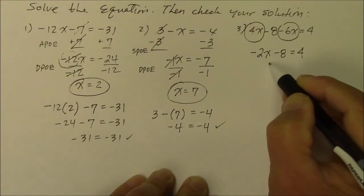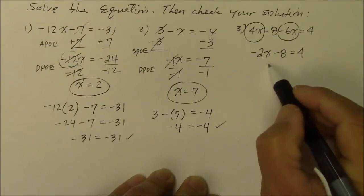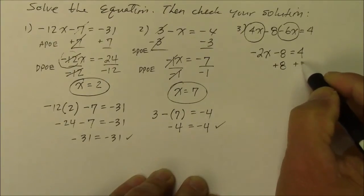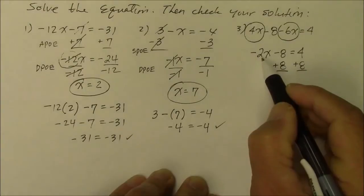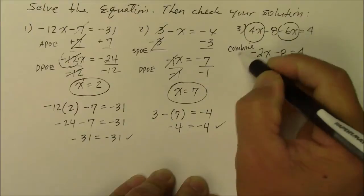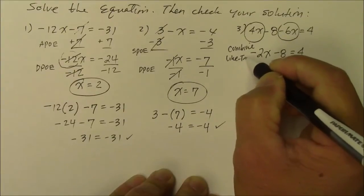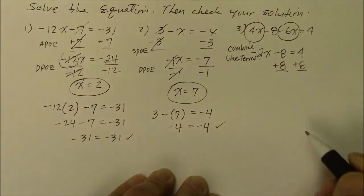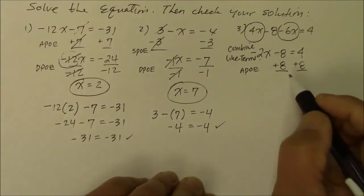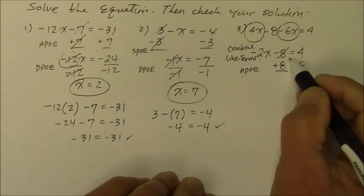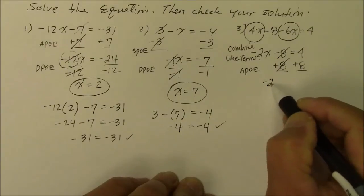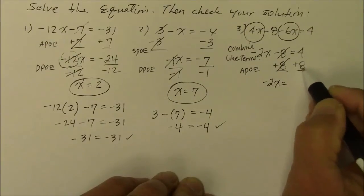Now to solve this, you do the opposite of minus 8, so you add 8 to both sides of the equation. Before I keep going, let me indicate what I did here. I combined like terms. And here I'm doing addition property of equality. So on the left side, negative 8 and positive 8, they're opposite, they're additive inverse, so they become 0, leaving me with negative 2x equals 4 plus 8 is 12.